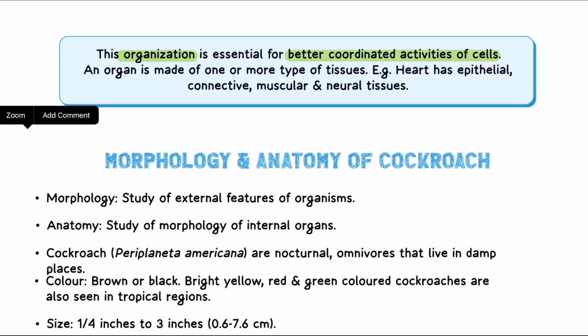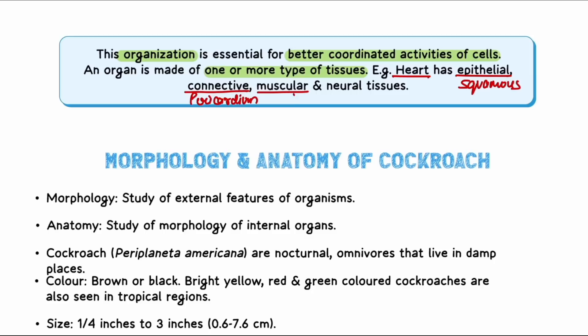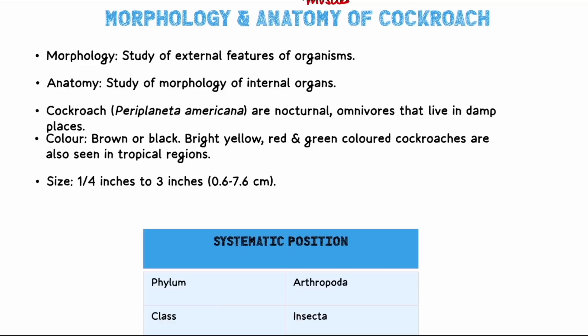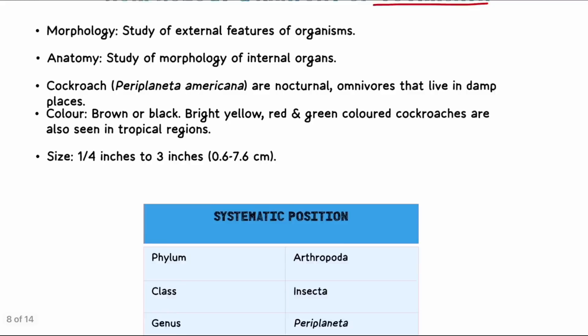Cells combine to form tissues, tissues form organs, and organs form organ systems — this organization allows better coordination of cell activity. An organ is made up of one or more types of tissues. For example, the heart contains epithelial tissue, connective tissue (the pericardium covering is dense fibrous connective tissue), muscular tissue (cardiac muscles in the heart wall), and neural tissue (SA node). This completes the structural organization topic.